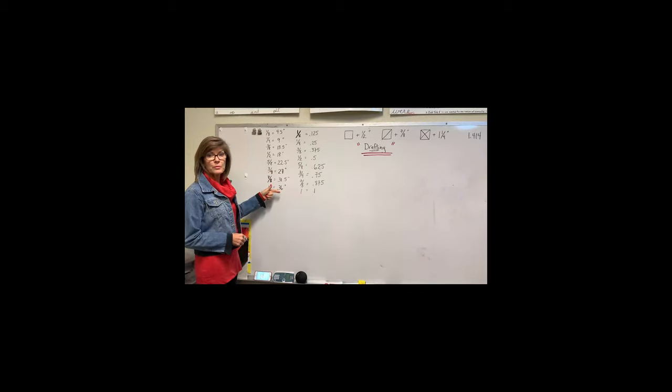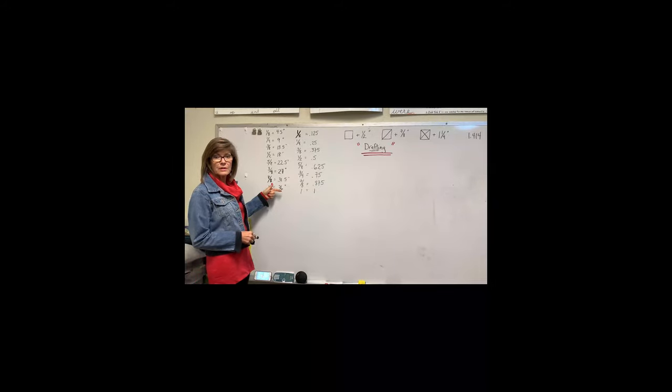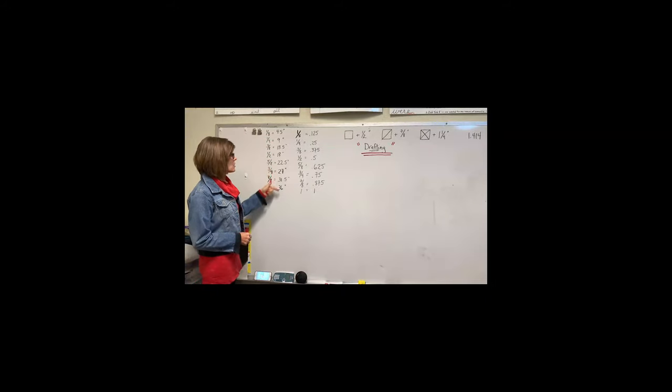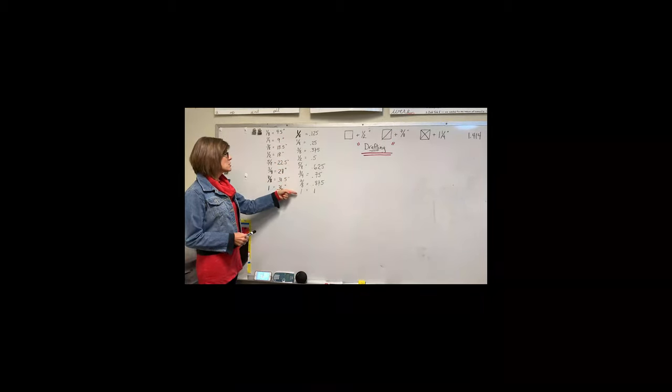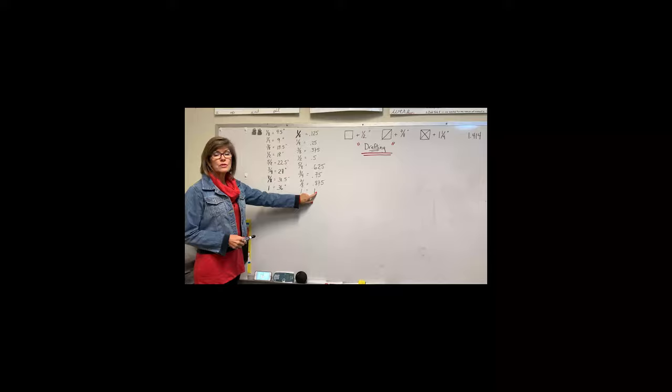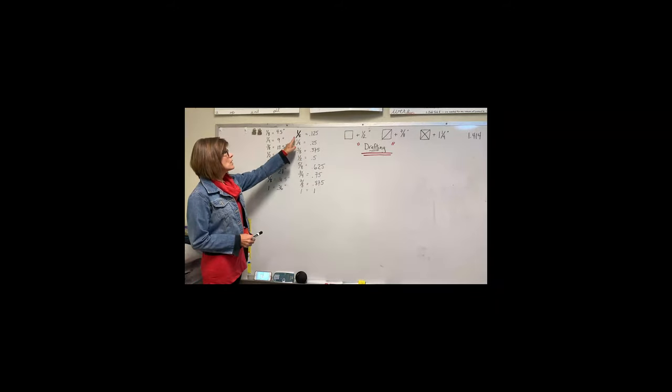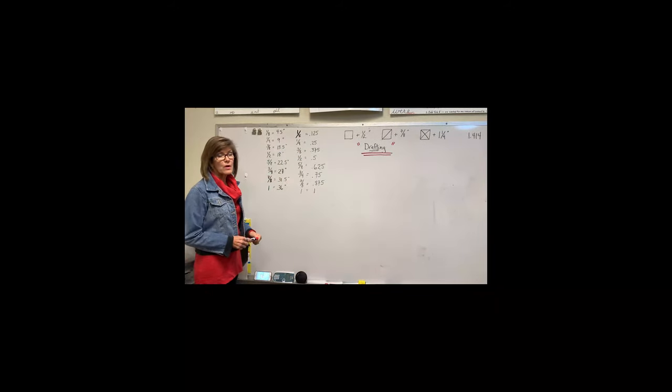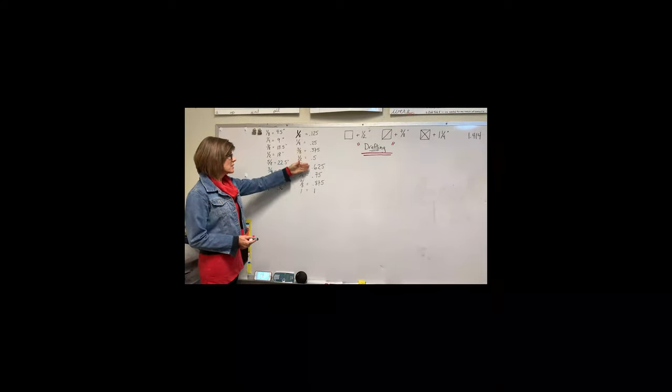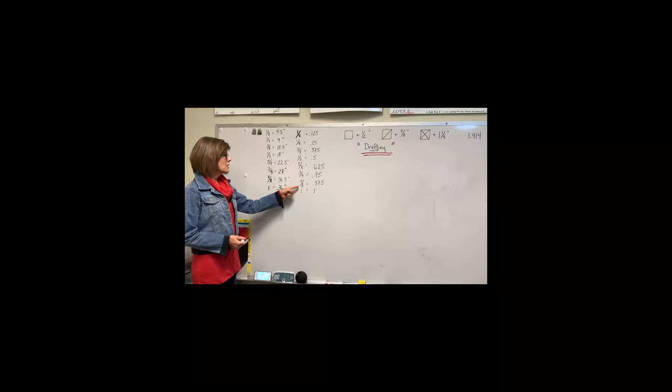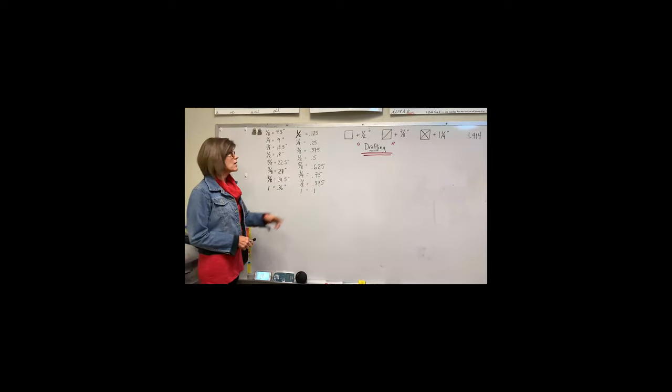I will be sending a handout in email that have all of these on it that you can use. Then over here we have again the same measurements, but these are what we're going to use to calculate with. So an eighth is 0.125, quarter is 0.25, 3/8 is 0.375, and on down the line to 7/8 is 0.875. These are the measurements I use when I'm calculating on drafting.